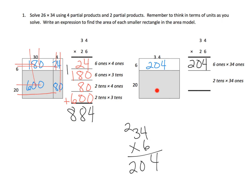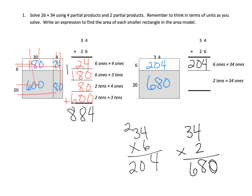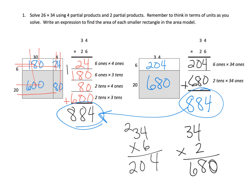The next area is 20 times 34 — that's two tens times 34 ones — so we do 34 times 2 and get 68, but it's actually 68 tens, which becomes 680. That box is 680, and we write 680 as our second partial product. Adding our two partial products gives the exact same answer of 884.